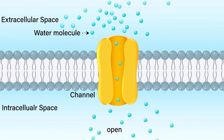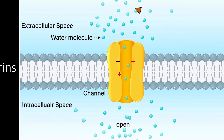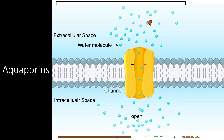Aquaporins are a type of channel protein that are specific to water. When an aquaporin is open, water can freely flow through the hollow center of the protein at a much faster rate than it can travel through the cell membrane. The aquaporin has a number of amino acids exposed on the inside of the tube that create a series of charged surfaces to actively select for water molecules. Water molecules can pass easily, but if an ion or large molecule tries to enter the aquaporin, it will be quickly rejected. These aquaporins are present in plants, animals, fungi, and even bacterial cells to allow for a fast passage of water in various cell types.